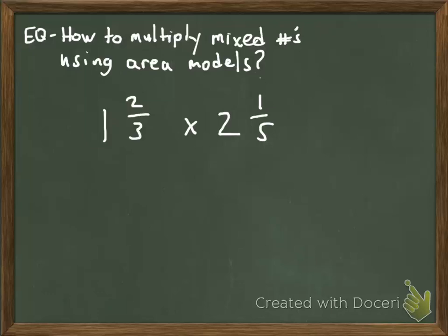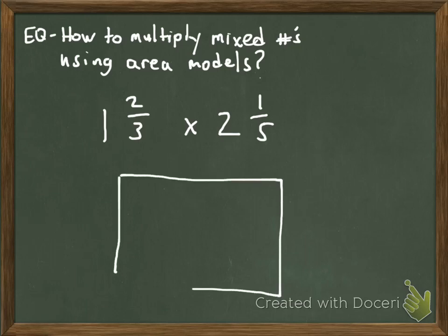Welcome, boys and girls. What we're going to do in this lesson is I'm going to show you how to multiply mixed numbers using area models. What we have here is our first example: 1⅔ and 2⅕. We're going to take those two factors and multiply them together using this area model here.